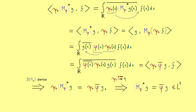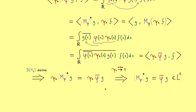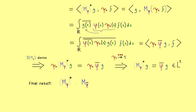Since the left-hand side M_phi_star g is in L2, the right-hand side phi-bar · g is also L2 — which was exactly what we needed to show that the two domains coincide. So we get our final result: the adjoint of the multiplication operator is again a multiplication operator, M_phi_star = M_{phi-bar}. If phi is a real-valued function then the complex conjugation changes nothing, meaning M_phi_star = M_phi — these operators are called self-adjoint, which is very important for applications.